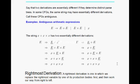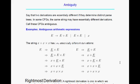This is called ambiguity. In some CFGs, the same string may have essentially different derivations. When such a phenomenon occurs, we say the grammar is ambiguous. This can also appear in ambiguous arithmetic expressions.